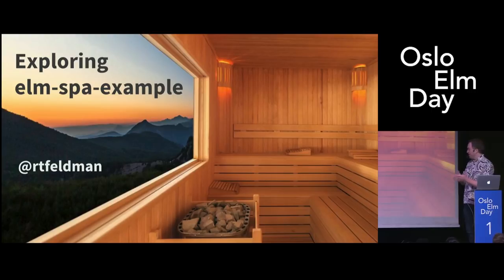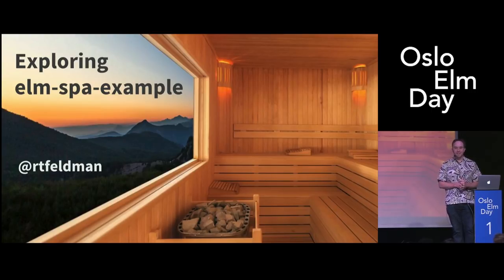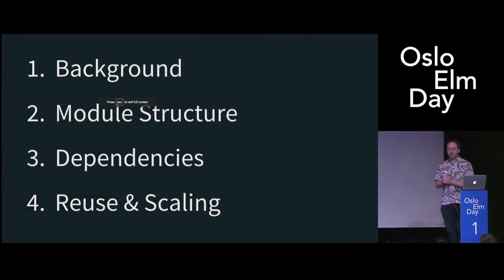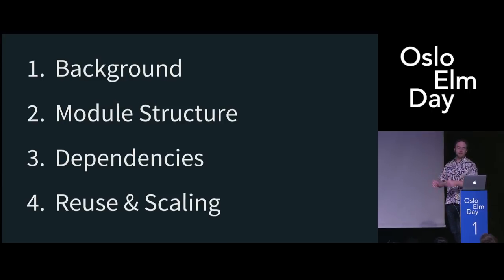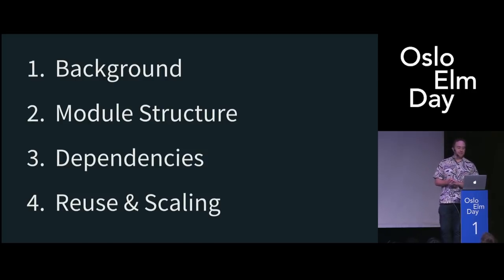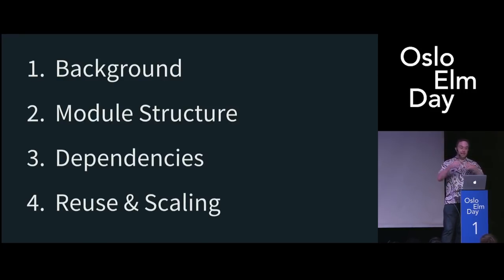So without further ado, let's kick it off. This is Exploring Elm SPA Example. I'm Richard Feldman. We're going to organize this into a few different parts. First, we're going to give some background — you may not know what the SPA example is, don't worry, I'll go through that. I'm going to talk about the module structure of the app, the dependencies — there might be some surprises there — and finally, I'm going to talk about reuse and scaling across the app.